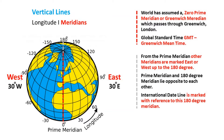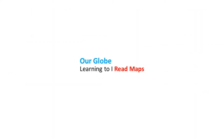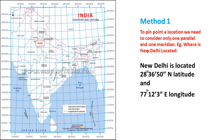Now that we know all about longitudes and latitudes, let's learn to read maps. To pinpoint a location on the globe, we need to consider only one parallel and one meridian. For example, New Delhi is located at 28 degrees 36 minutes and 50 seconds north latitude and 77 degrees 12 minutes and 3 seconds east longitude.